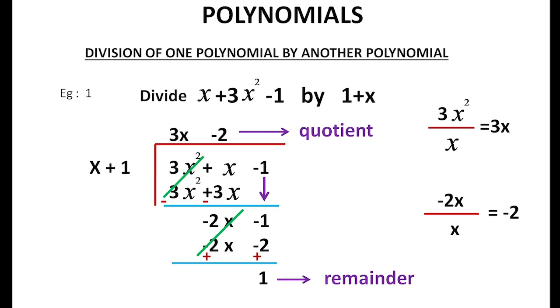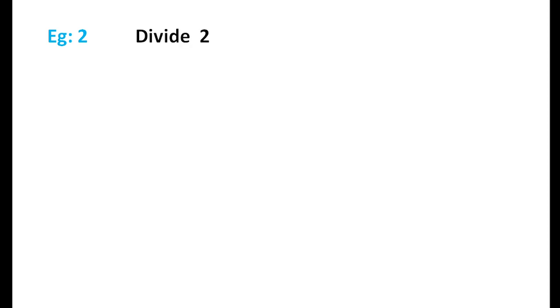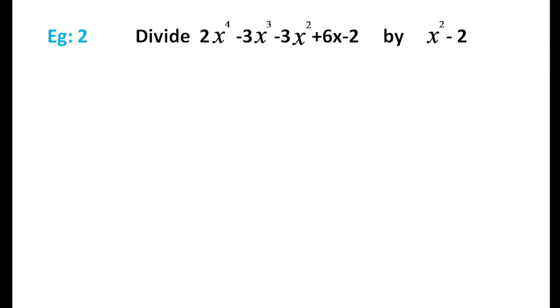Here we divide a polynomial with a degree of 4. The question is: divide 2x⁴ minus 3x³ minus 3x² plus 6x minus 2 by x² minus 2. Here we apply the standard form.